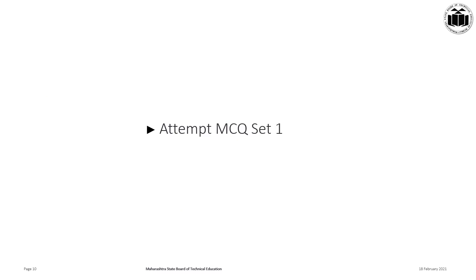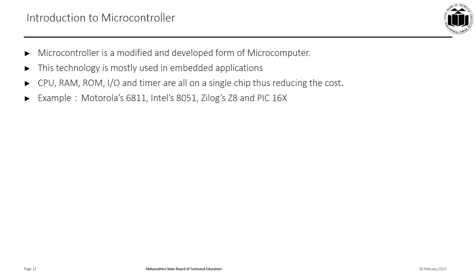It is now quiz time — please attempt MCQ set one. Regarding the microcontroller: if all the components are integrated on one chip, the resulting chip is called a microcontroller, also referred to as a modified and developed form of microcomputer. In a microcontroller, the CPU, RAM, ROM, I/O, and timer are all on a single chip, which reduces cost and size. Intel Corporation developed the first 8-bit microcontroller, the 8051, in 1981. Other examples include Motorola 6811, Zilog's Z8, and the PIC 16x series by Microchip.